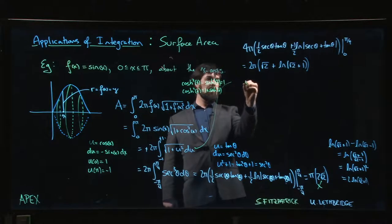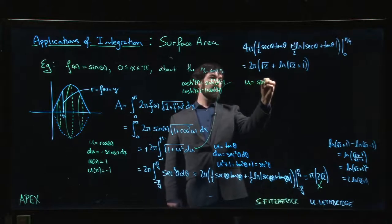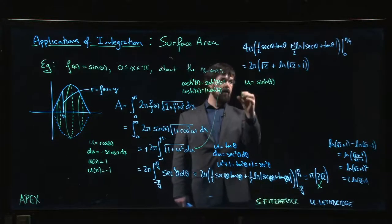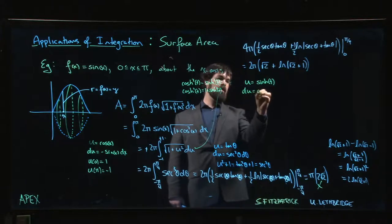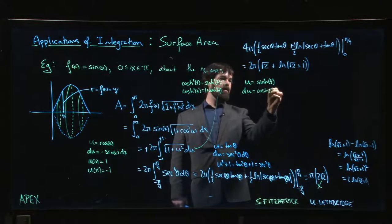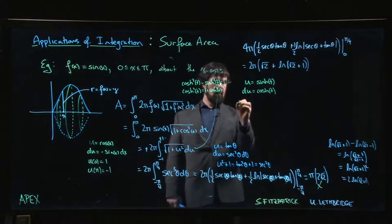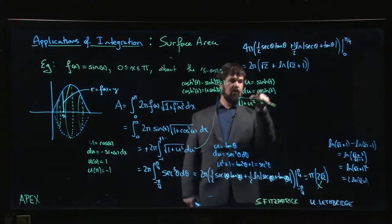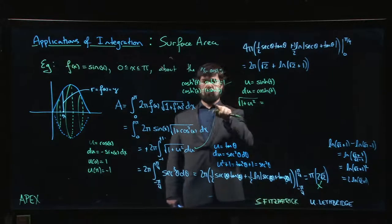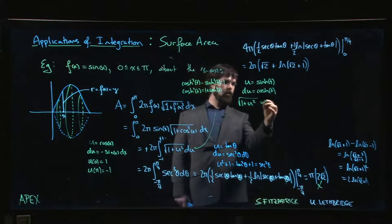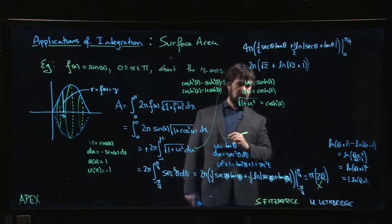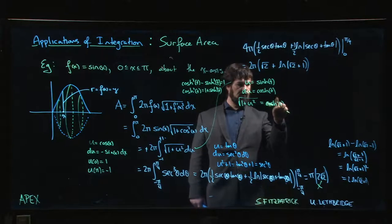The other option I have here is I can let u equal to hyperbolic sine. Then du is hyperbolic cosine dt, and the square root of one plus u squared is the square root of one plus hyperbolic sine squared, which is the square root of hyperbolic cos squared, so the square root is gone.